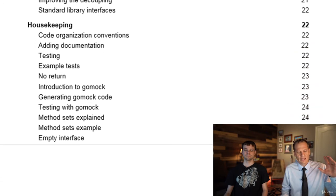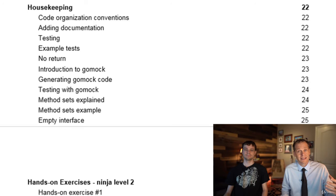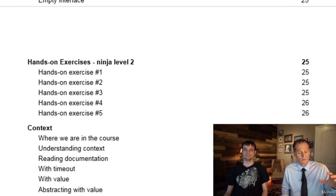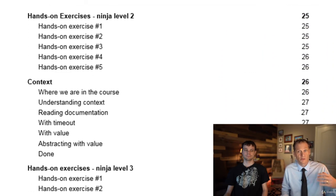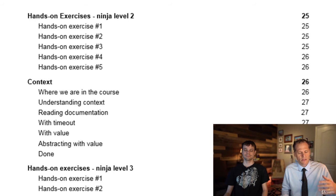We're going to go through how to write tests, writing example tests, and generating mock code with GoMock. We're going to see how GoMock works and look at method sets in Go. This is all going to be using the Go programming language, which is the best programming language you can learn today. We're also going to go over what context is in Go and why it's important and how you use it.